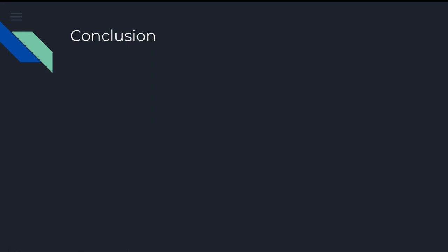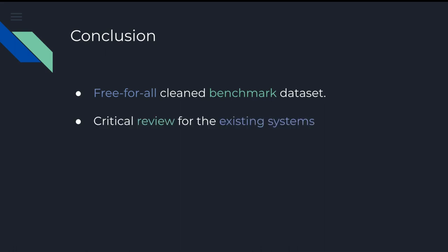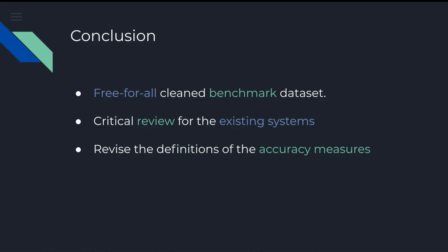To conclude this work, we presented the first free-for-all benchmark dataset for this problem extracted from Tashkila Corpus. We provided a critical review for the currently existing systems and tools for Arabic text diacritization and performed an empirical study to compare the performance of six of them on our dataset, showing that machine learning approaches easily dominate rule-based approaches. Moreover, we revised the definitions of the most common accuracy measures used: diacritic error rate and word error rate. In order to enhance the reproducibility of our work, the dataset is publicly available on GitHub, along with all codes related to the cleaning process and comparison procedure. Future work will be done to solve the diacritization problem using feedforward neural networks, recurrent neural networks, transformers, and convolutional neural networks.